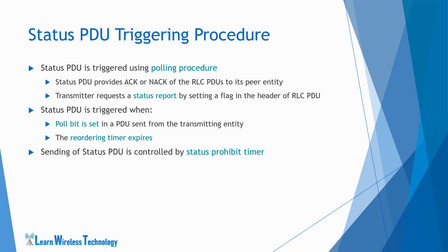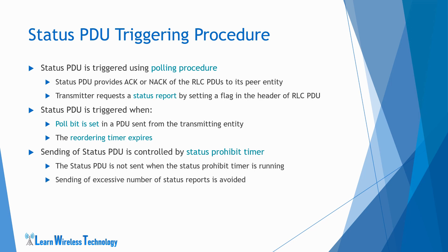The sending of status PDU is also controlled by a timer known as the status prohibit timer. When the status prohibit timer is running, the status PDU is not sent. The timer avoids sending an excessive number of status reports and ensures that duplicate status PDUs are not sent unnecessarily. When a status PDU is sent, the status prohibit timer is restarted, so the status reports cannot be transmitted more often than once per time interval as determined by the timer.